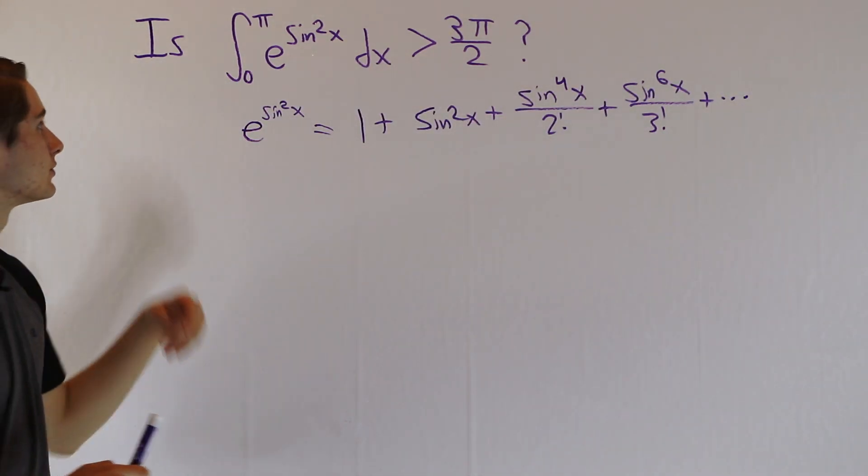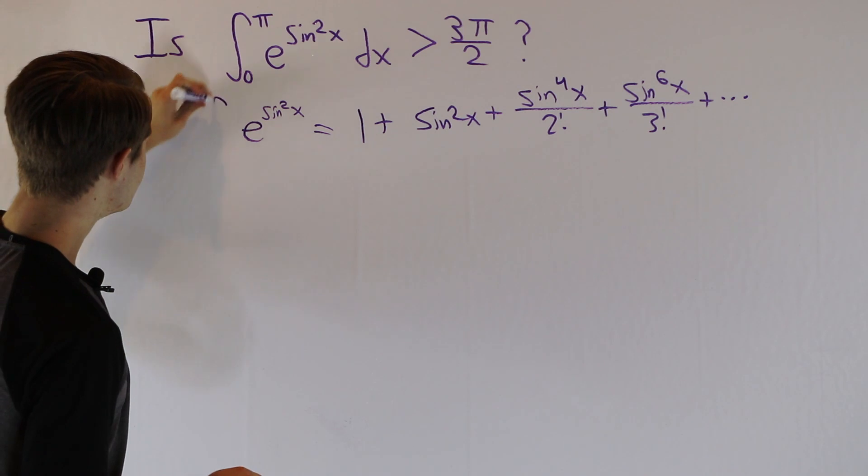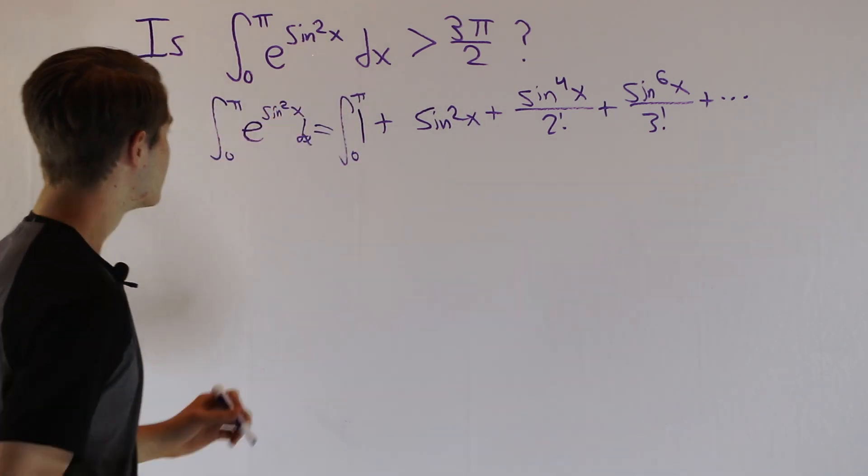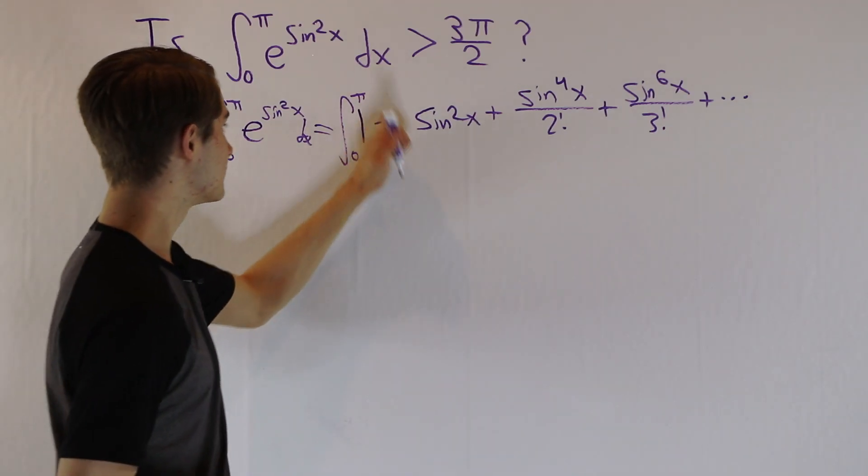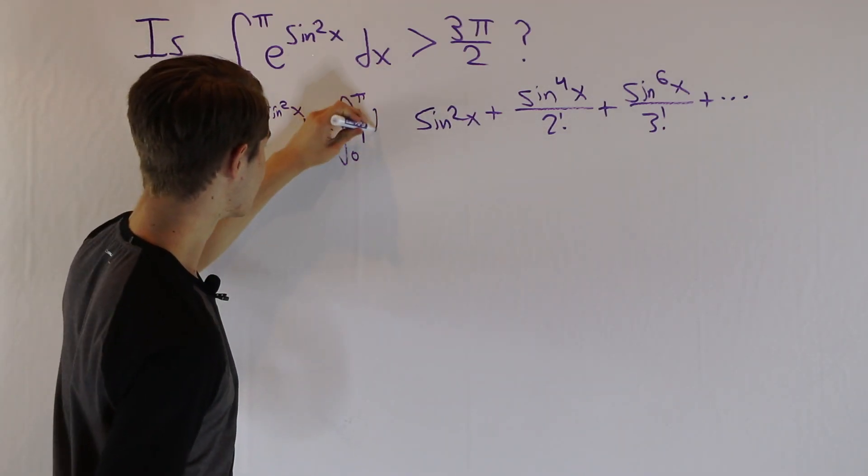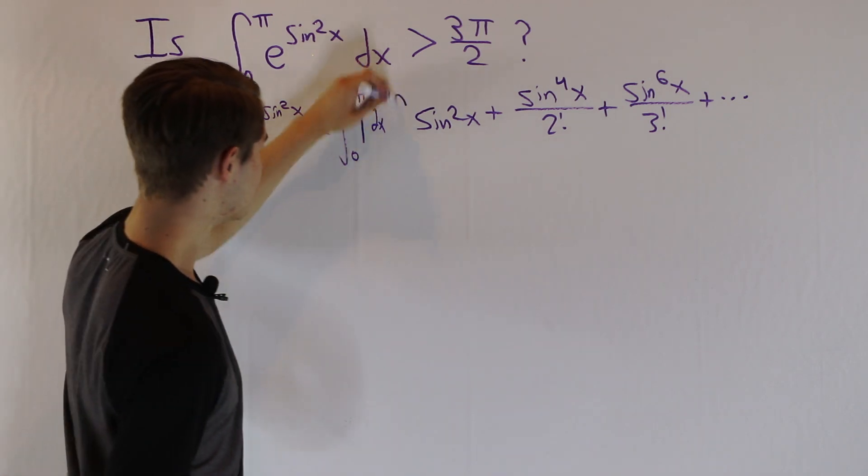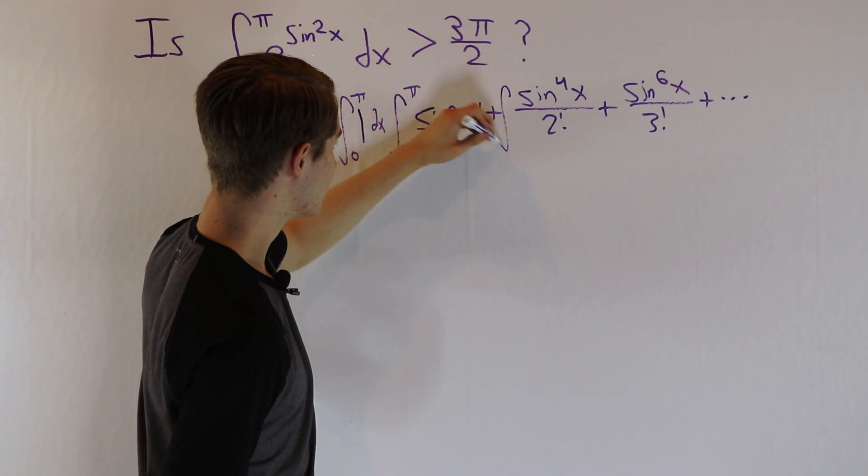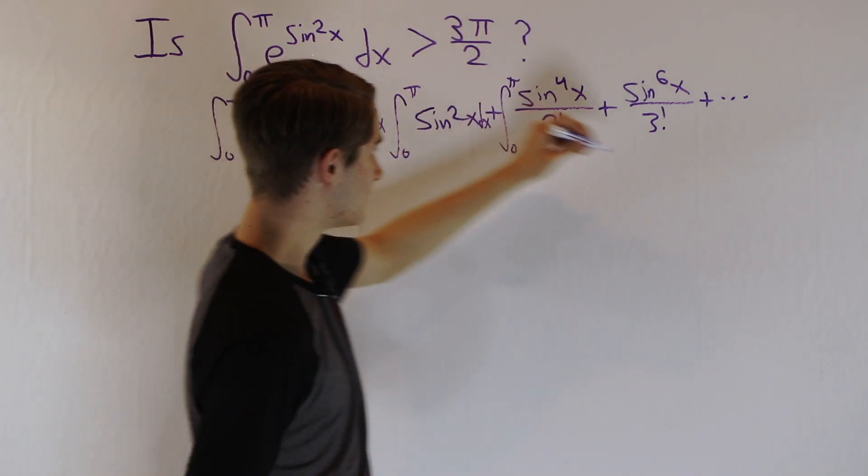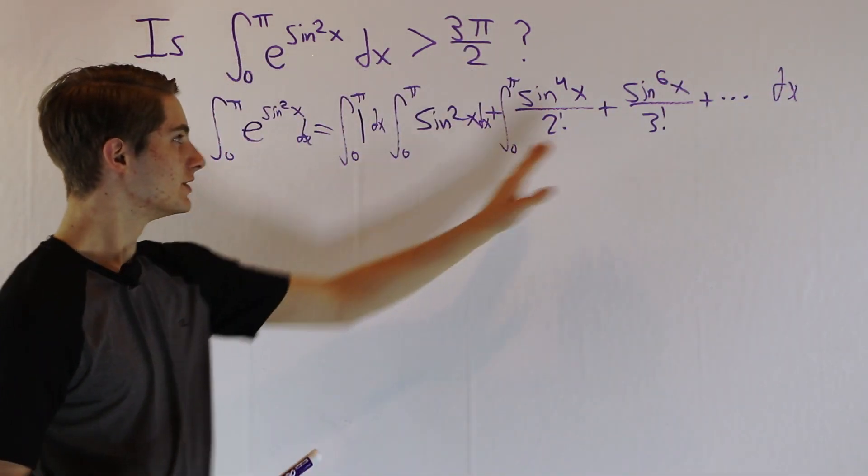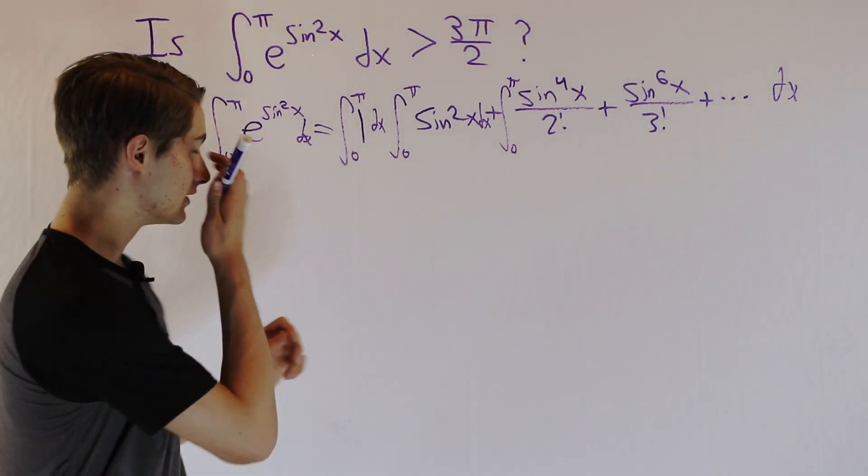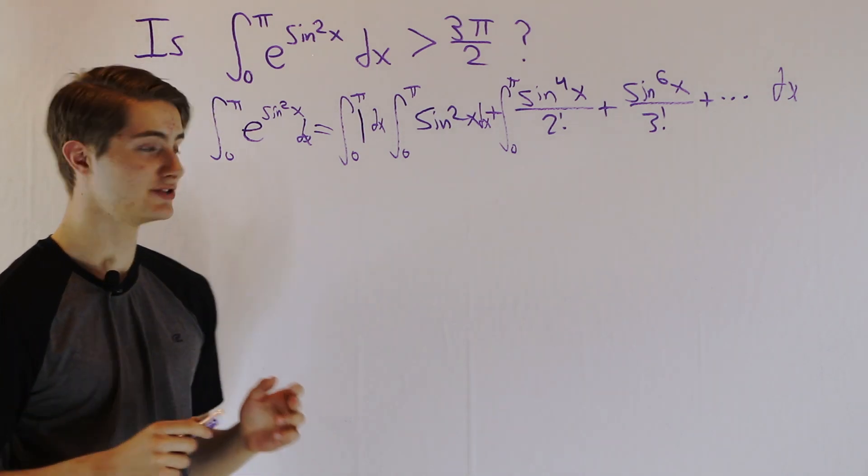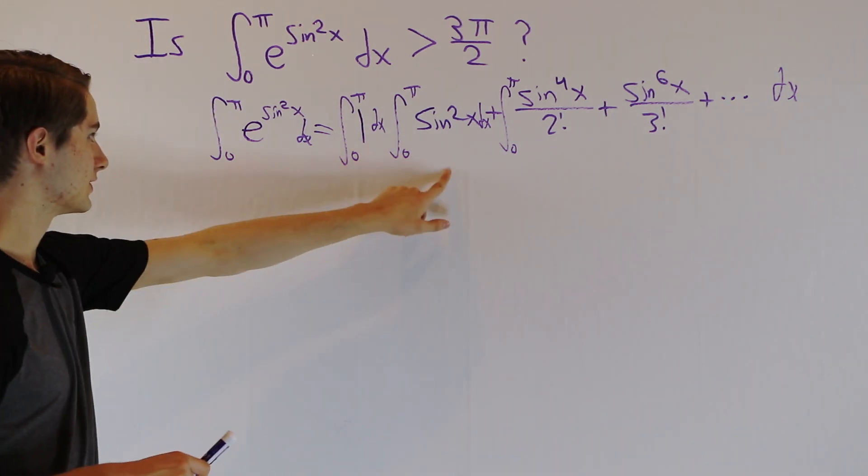So if we want to take the integral from 0 to π, we can just do that on both sides of this equation here. And what I want to do is take a look at the first couple of terms. We have the integral of 1, and then next we have the integral of sine squared x, and then we can take the integral from 0 to π of all the rest of the stuff, because this is kind of annoying to integrate, but we know how to integrate 1, and we can integrate sine squared x pretty easily as well. So let's take a look at these two.